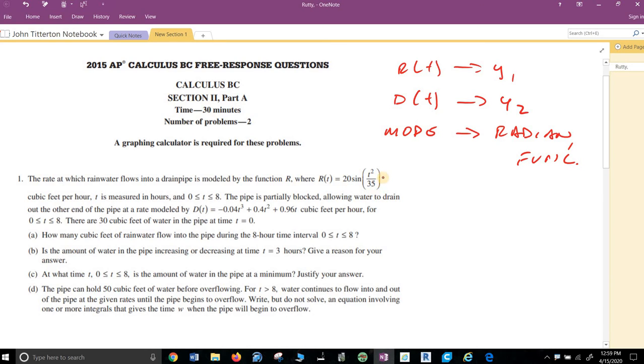So, rate, 20 sine T squared measured in cubic feet per hour. T is measured in hours, 0 to 8 hours. The pipe is partially blocked, allowing water to exit out the other end at D of T.